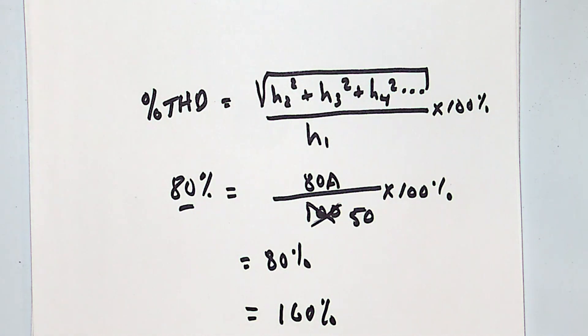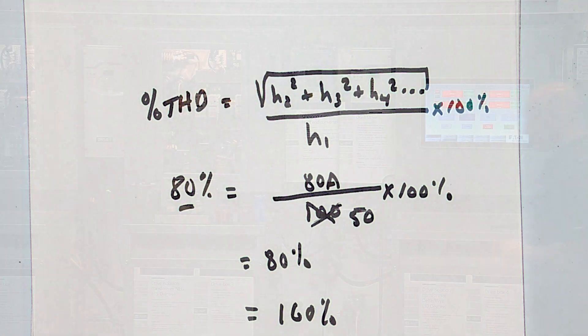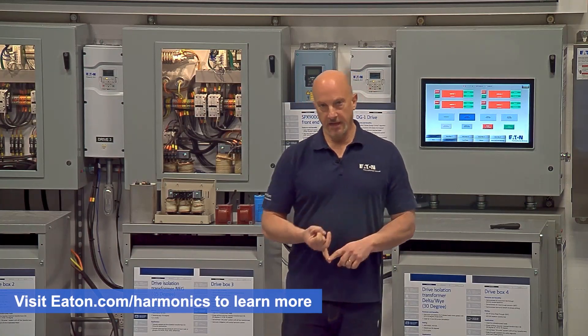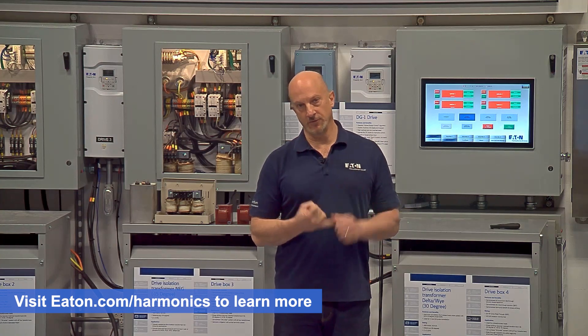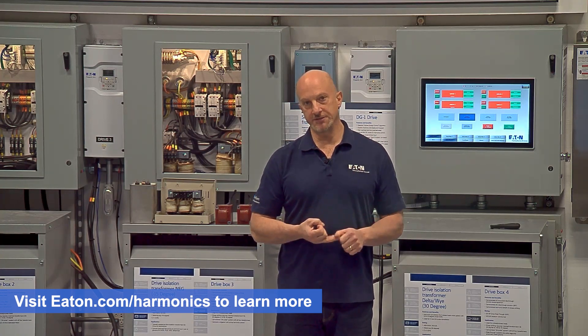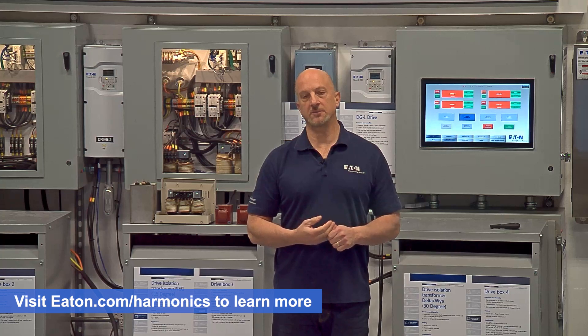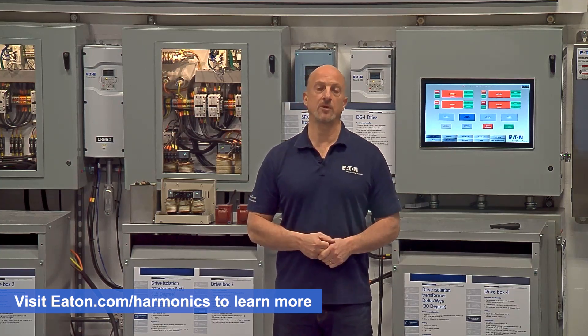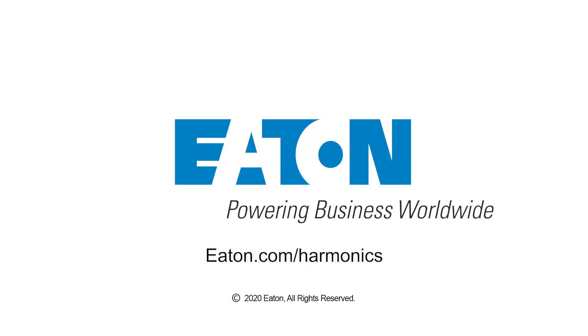Don't get caught up in the percentages, because the amps of current are what causes the voltage to get distorted, and the voltage distortion and the heating caused by the amps are what cause problems from harmonics.